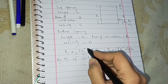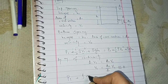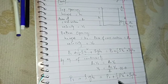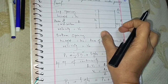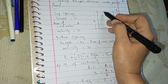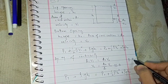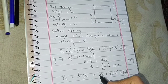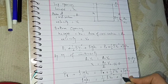Substituting V1 equal to zero into the equation, we get: P1 plus rho g H1 equals P2 plus half rho V2 squared plus rho g H2. Now for the pressure terms P1 and P2: both the top opening and the bottom opening are exposed to atmospheric pressure only, so P1 equals P2, and we can cancel those terms.